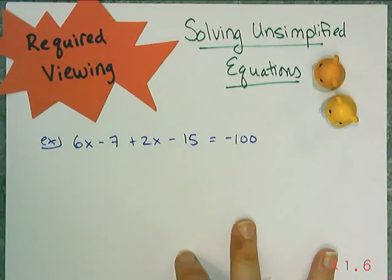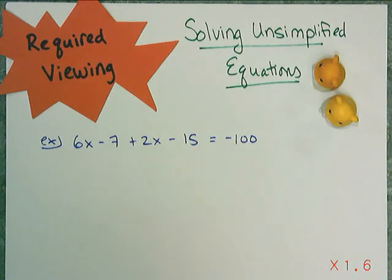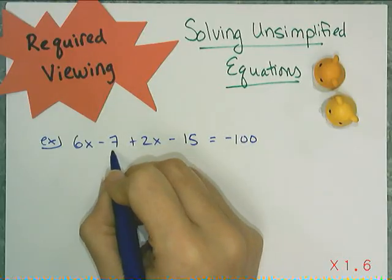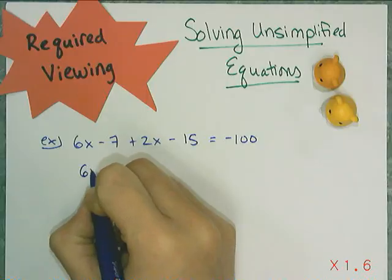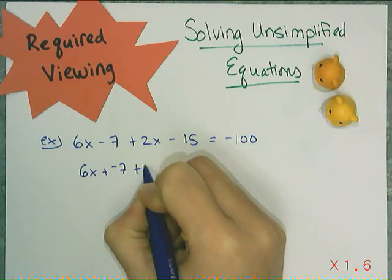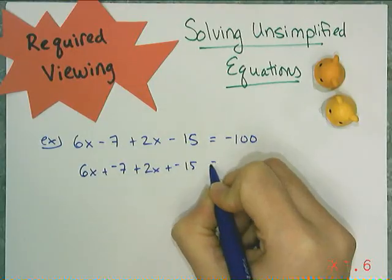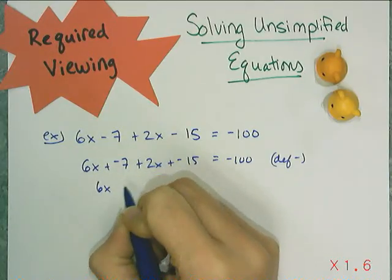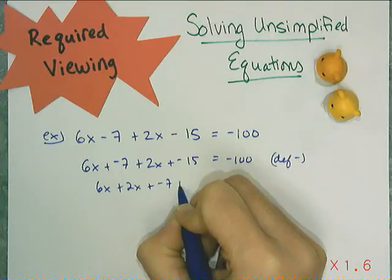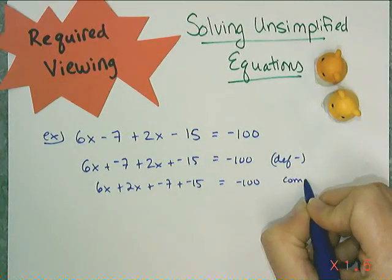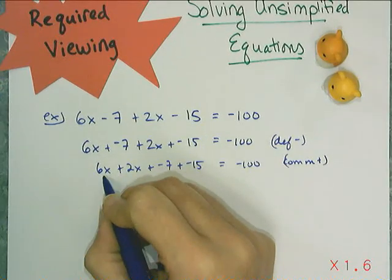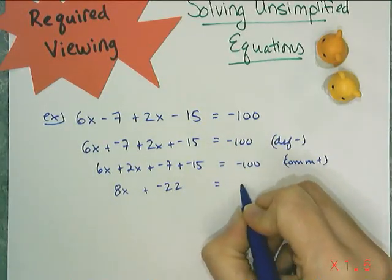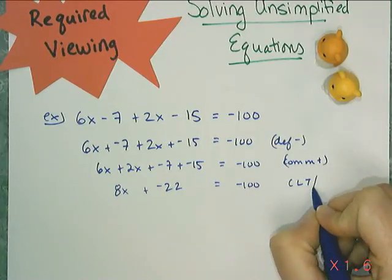I'm going to show you the traditional way: simplify first, then use your properties. I want to commute and put the 6x with the 2x, but that minus 7 is in the way. Whenever there's a subtraction, I can't commute, so I have to convert those into adding the opposite using the definition of subtraction. Then I can commute and get 6x plus 2x plus negative 7 plus negative 15 equals negative 100. Combining like terms gives 8x plus negative 22, which equals negative 100.